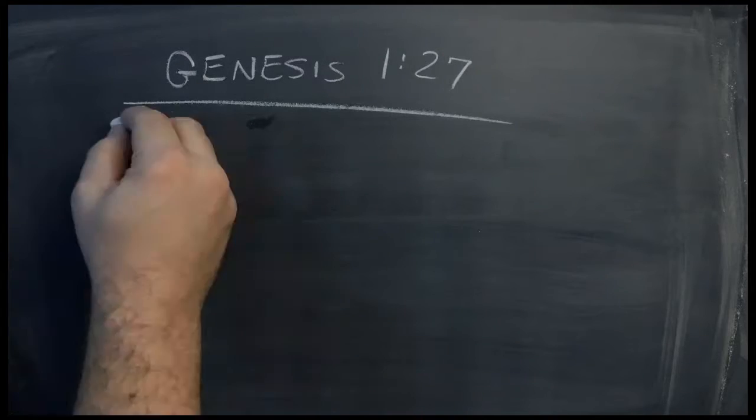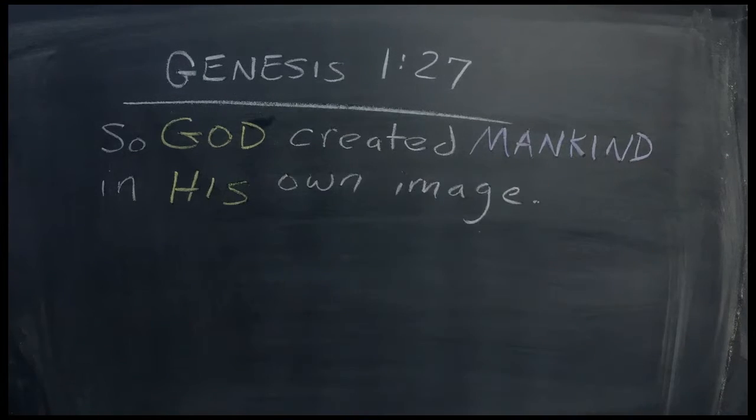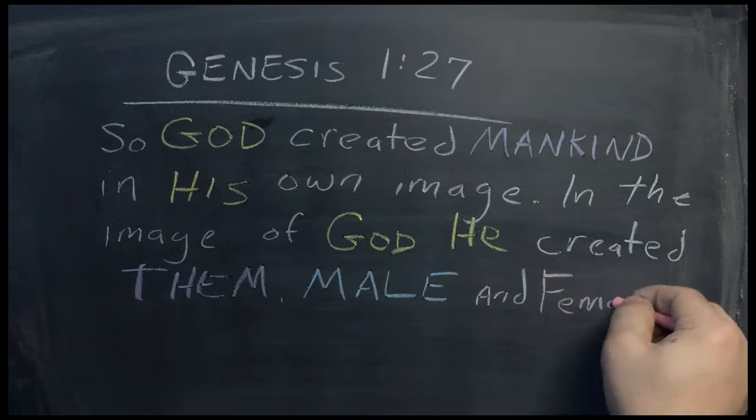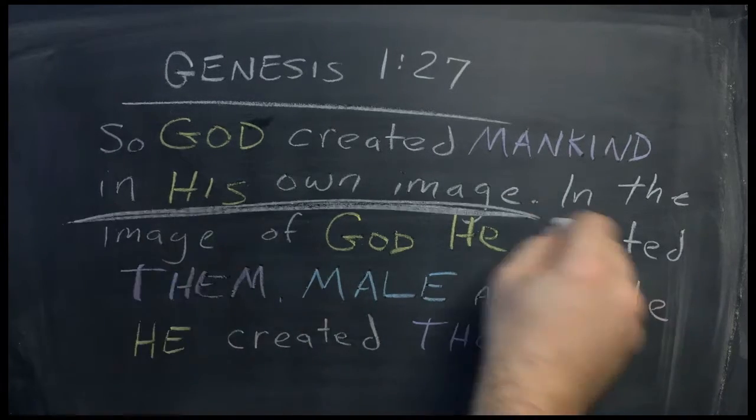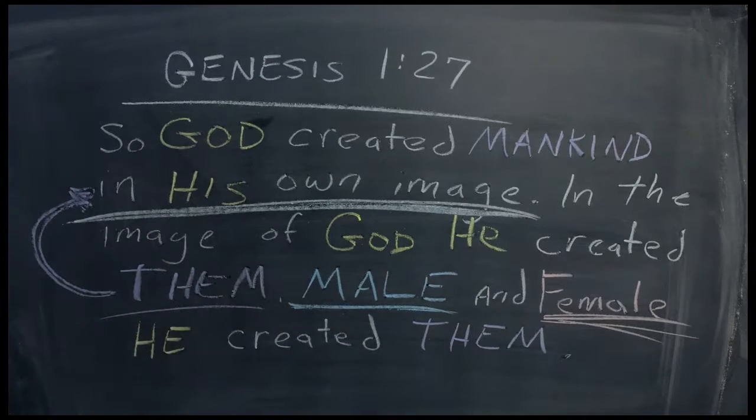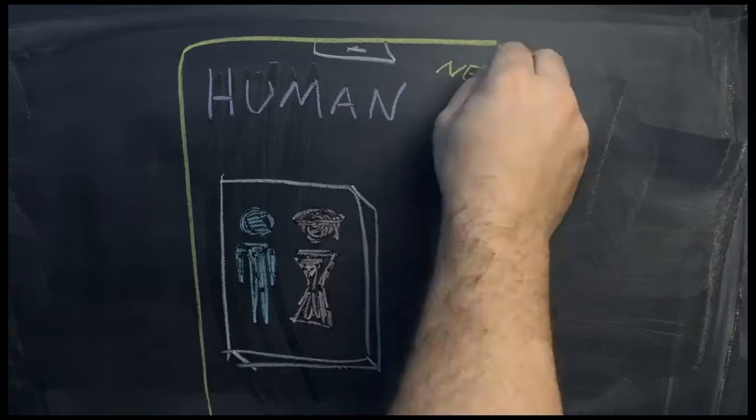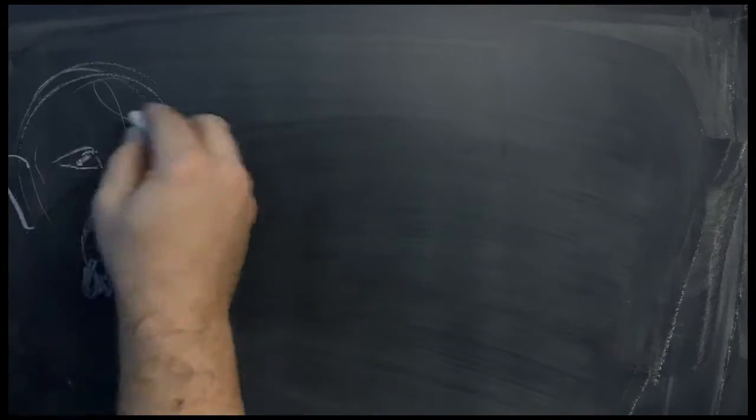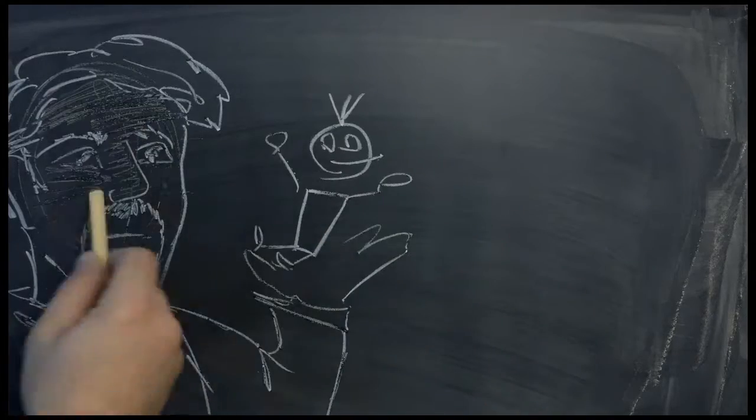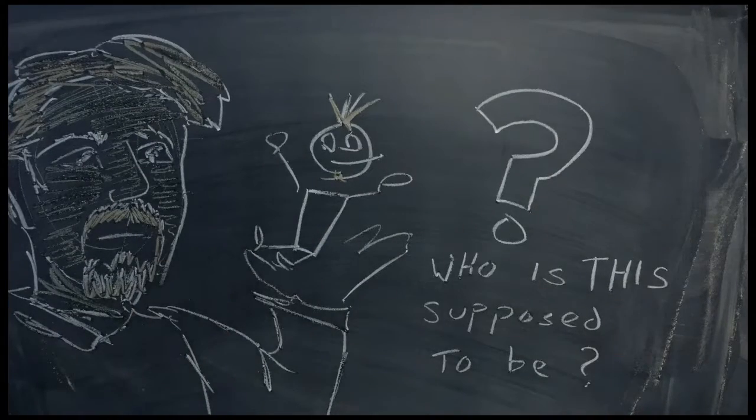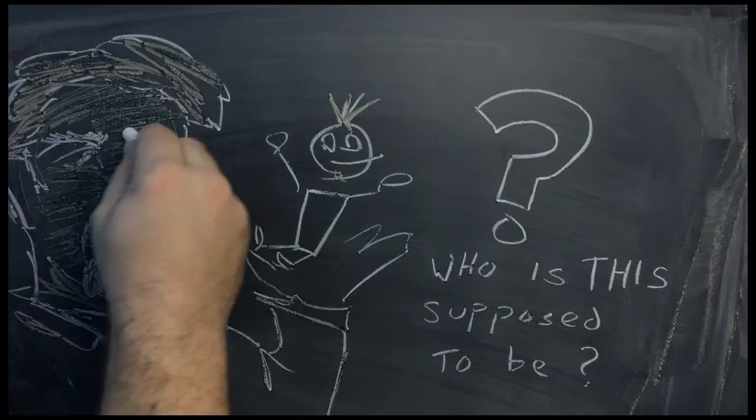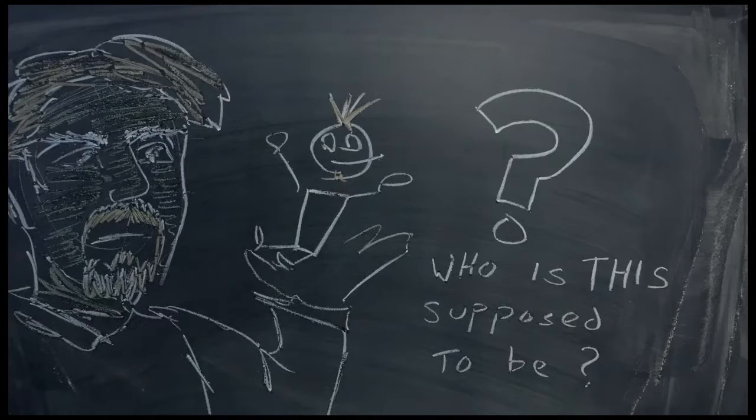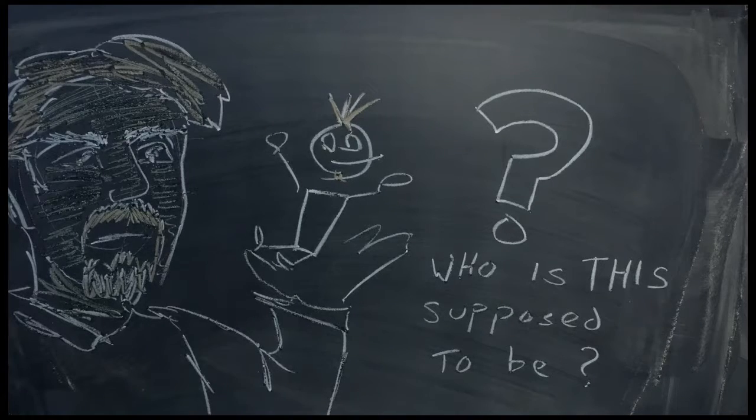In Genesis 1:27 we are told, so God created mankind in his own image. In the image of God, he created them. Male and female, he created them. The first thing we are told about being human is that we are made in the image of God. We are like God action figures. Whenever you see an action figure, your first reaction tends to be, oh man, this doesn't look anything like name of actor or actress who played that character in the latest movie. The reason you can say that is because there is a real person whose image that action figure is intended to resemble. If there was no real actor, then you couldn't say that.